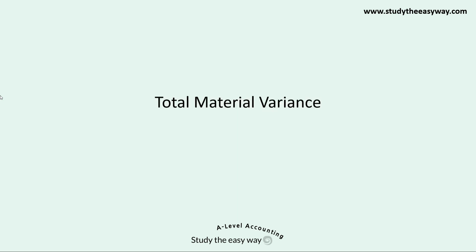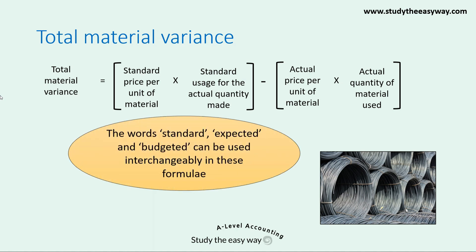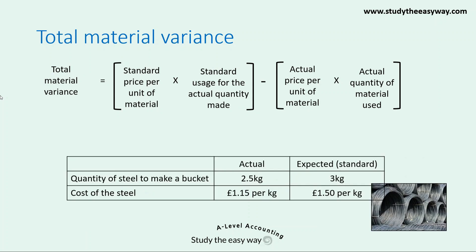Let's look at the formula for the total material variance. It's calculated in two parts. In the first bracket, we multiply the standard price per unit of material — per kilogram of steel — by the standard usage of steel for the actual quantity of buckets made. From that, we deduct the actual price per kilogram of steel multiplied by the actual quantity of steel used. Note that the words standard, expected, and budgeted can be used interchangeably in this formula.